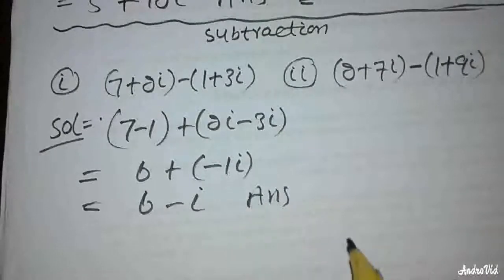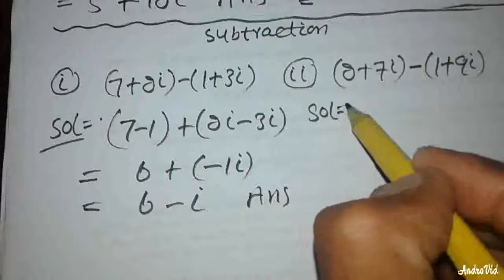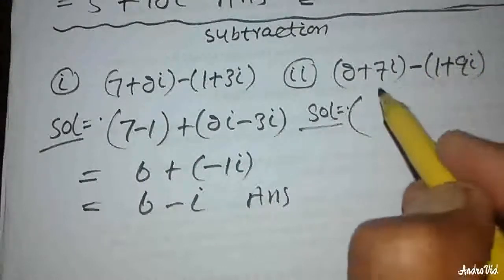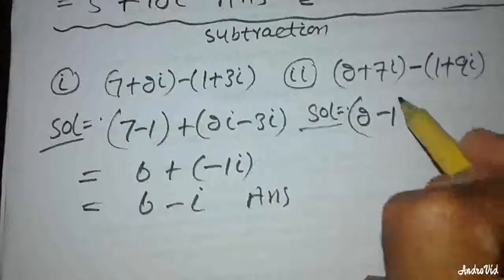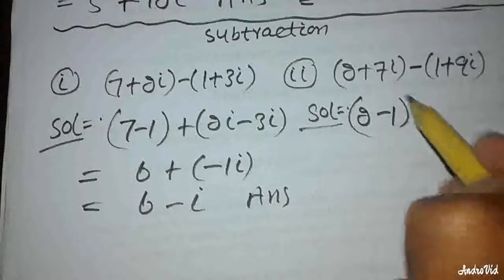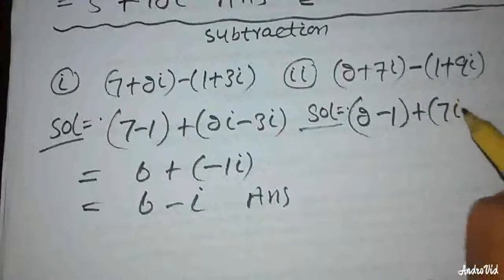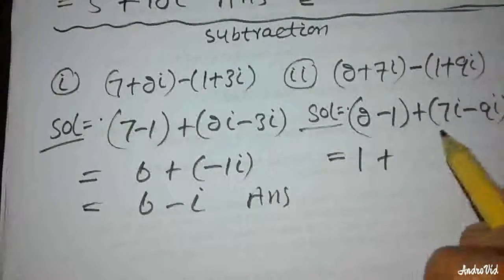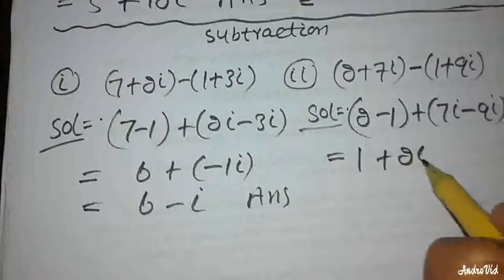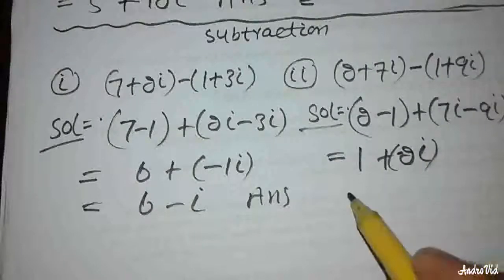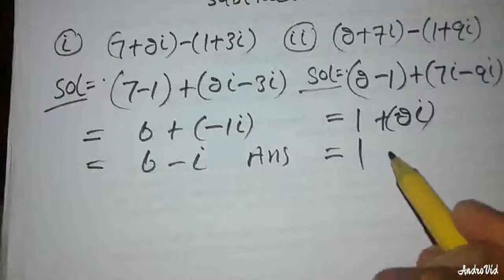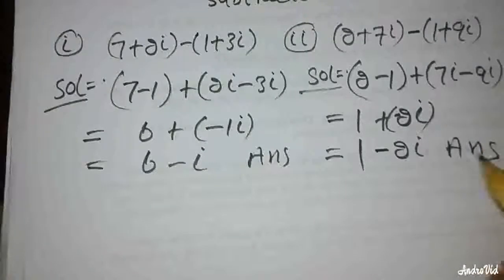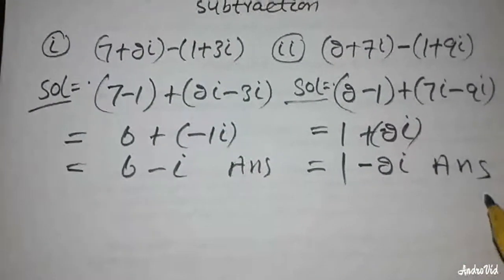Example number 2 of subtraction: 2 minus 1 iota, minus 1 plus 7 iota minus 9 iota. 2 minus 1 equals 1, and 7 iota minus 9 iota equals minus 2 iota. The answer is 1 minus 2 iota.